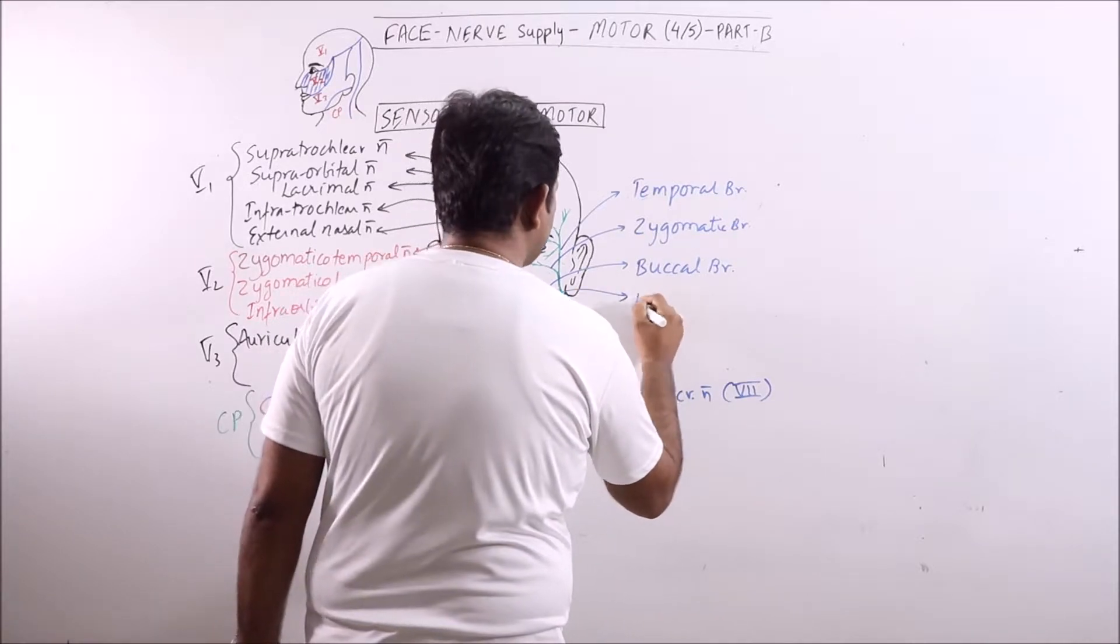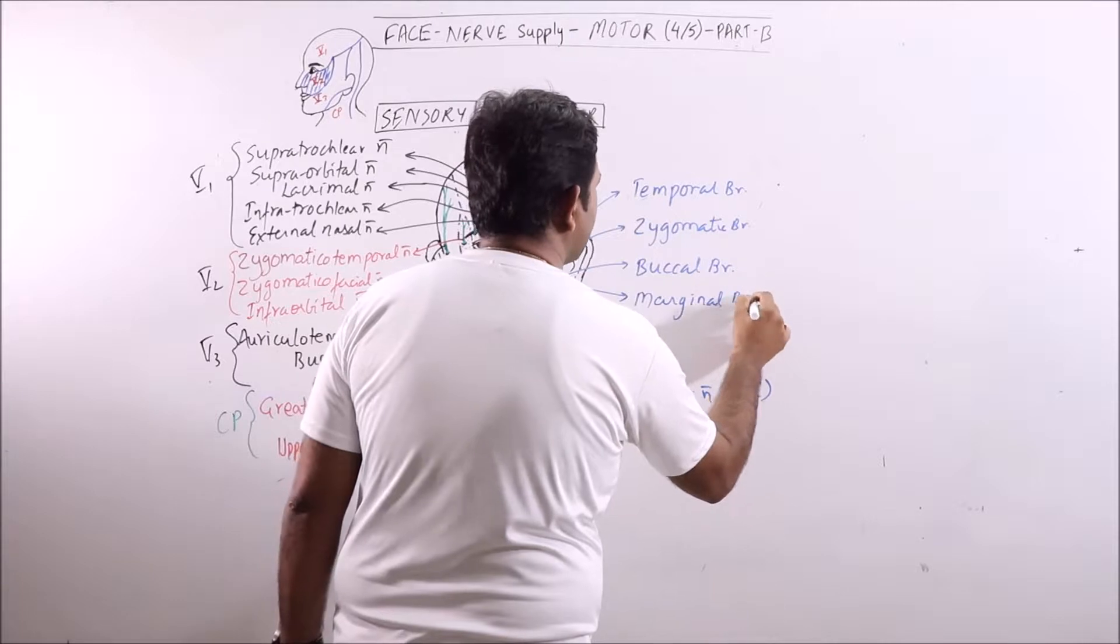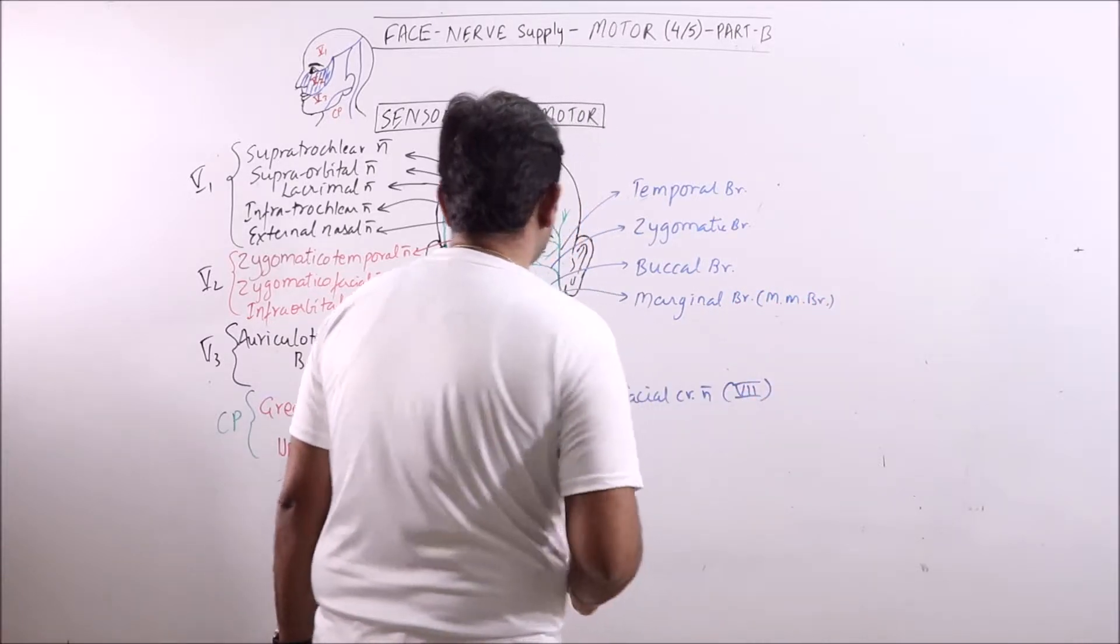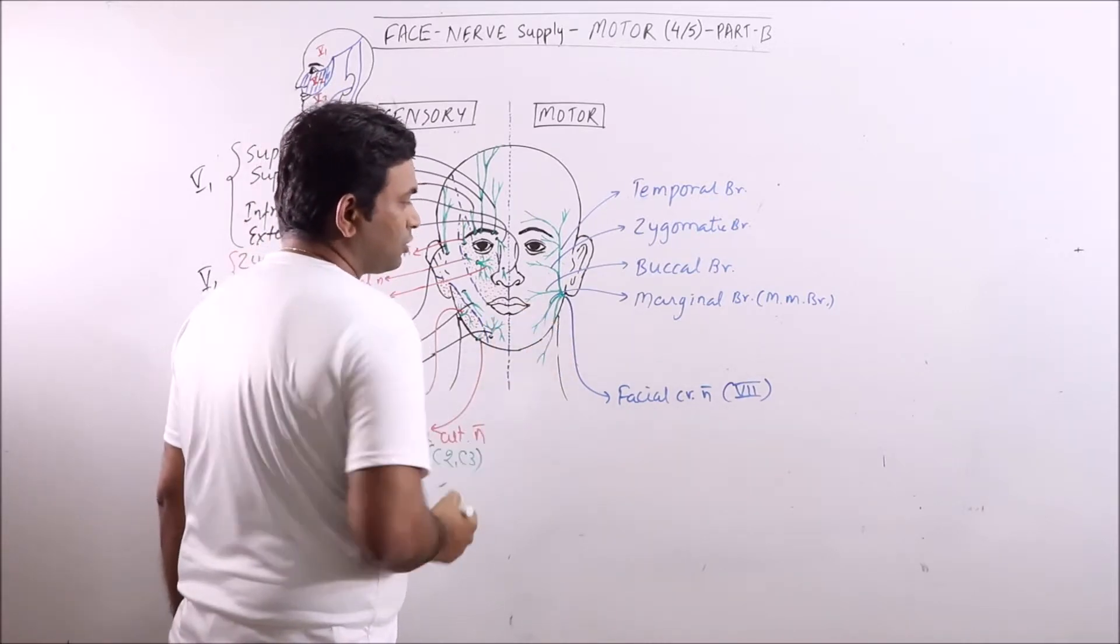This one is marginal branch or marginal mandibular branch. It supplies the lower lip and the muscles of the jaw.